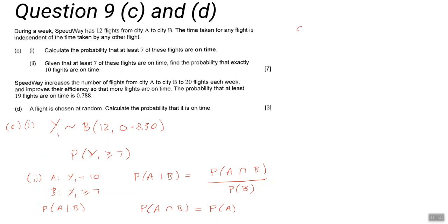And for D, we now change. We now have 20 flights a week, and this is why I used Y2 for this event. And we know that this is distributed binomially, and it's 20. There are 20 flights, but we don't know the probability.